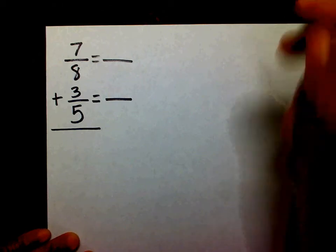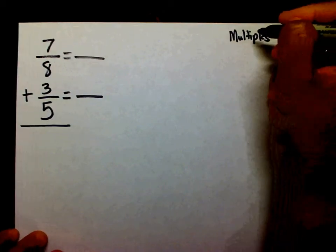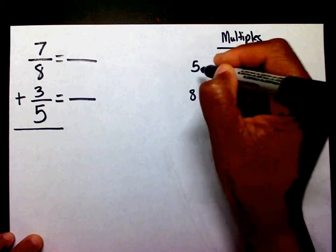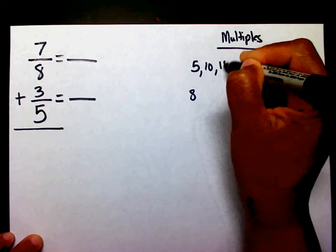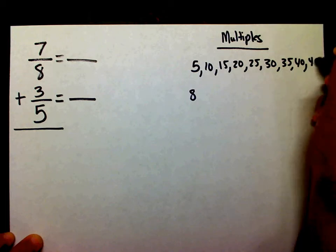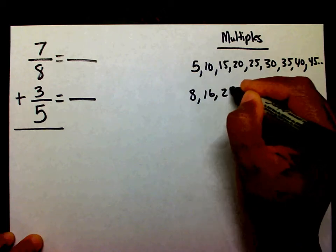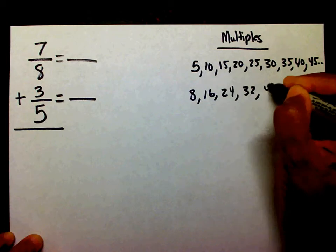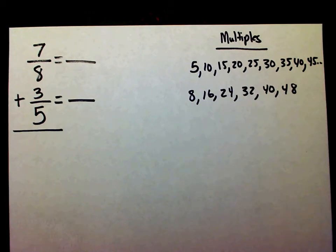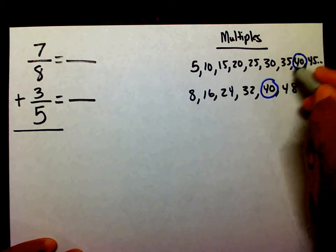Whenever you find your new denominator, you want to think about your multiples. I'm going to list my multiples of 5 and my multiples of 8. For 5: 5, 10, 15, 20, 25, 30, 35, 40, 45 and so forth. For 8: 8, 16, 24, 32, 40, 48. And you can see that they share a common multiple of 40. This is going to be my new denominator.